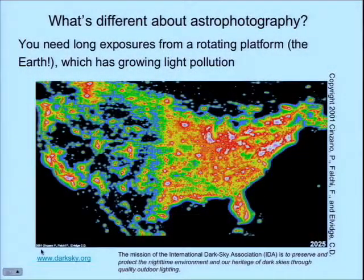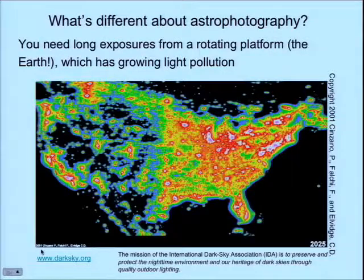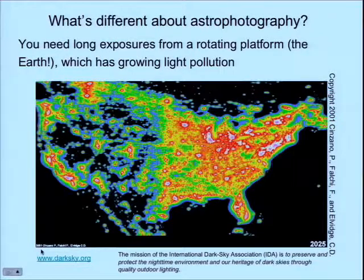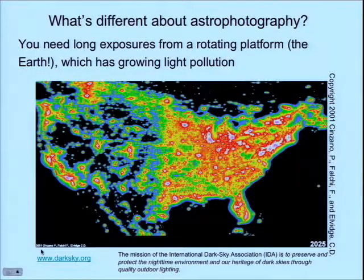This slide comes from the International Dark Sky Association. Their mission is to preserve and protect the nighttime environment and our heritage of dark skies through quality outdoor lighting. They'll help you or your community find lighting fixtures that ensure all the light falls on the ground or on the things you need to light up, and doesn't spill up into the sky. If you've driven down 580 or 680, you've seen car sales places where the light just barfs out into the sky all the time.